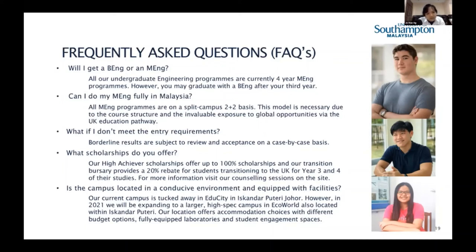FAQ: Can I do my Master of Engineering fully in Malaysia? All our MEng programs operate on a split-campus two-plus-two basis — two years in Malaysia and two years in the UK. This is not a twinning program. Twinning programs involve one university franchising to another; our programs are thoroughbred University of Southampton programs. We are the same university on a split campus, and this model provides invaluable exposure and global opportunities through the UK education pathway.